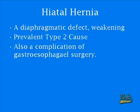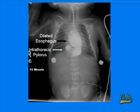Going into depth on diaphragmatic defects, one of the most important ones that causes gastric volvulus is hiatal hernia. It's a diaphragmatic defect that causes weakening in the diaphragm and thus allows the stomach to move up into the thorax. This is a prevalent Type 2 cause and also a complication of gastroesophageal surgery. Reviewing our patient's KUB, we can see that this is not only a case of organoaxial gastric volvulus, but also a case of paraesophageal hiatal hernia.